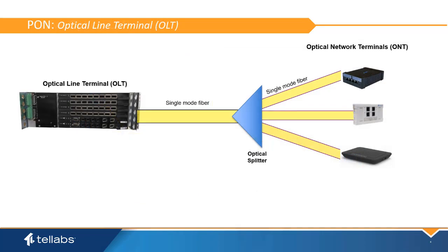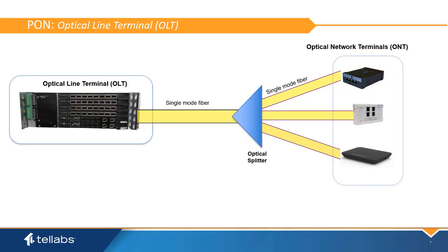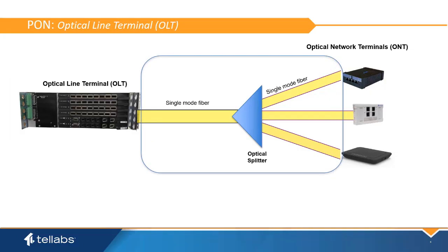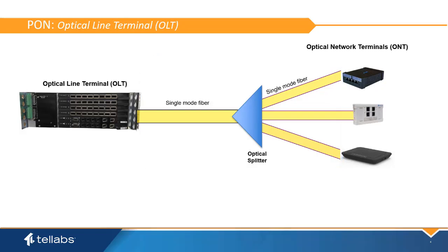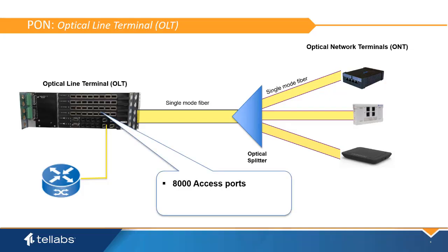There are three basic parts to the passive optical network: the optical line terminal, the optical network terminal, and the PON interface. The OLT serves as an optical distribution point of the PON interface and also serves as a communication uplink to the core network. The OLT provides the layer 2 operation of the switch, establishing a forwarding table for up to 8,000 LAN access ports.